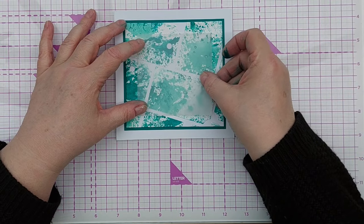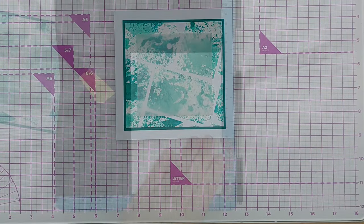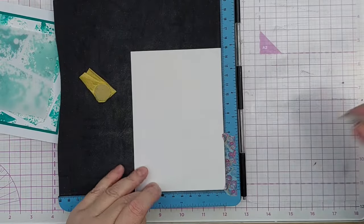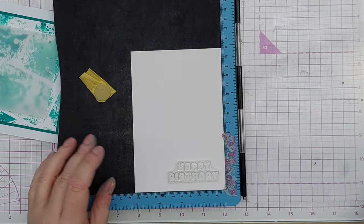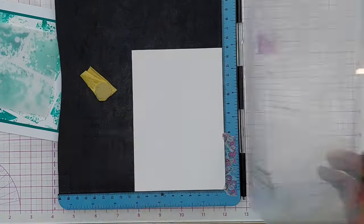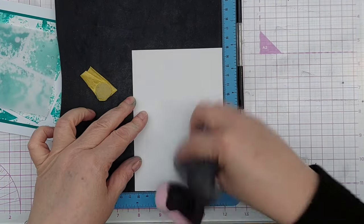So the next thing I did was use another square die to cut a square of vellum. And I'm going to put this in the middle of my card just to mute down the smushed tags a little bit. I think that helps with the clean and simple look too.